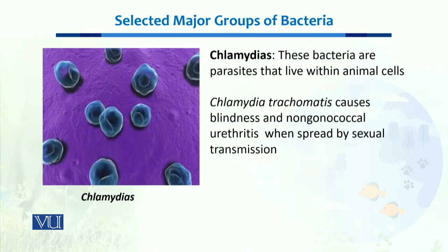Then we have Chlamydia, which is also a major group of bacteria. These bacteria are actually parasites and live within animal cells. The example is Chlamydia trachomatis, which causes blindness and non-gonococcal urethritis, and spreads by sexual transmission.